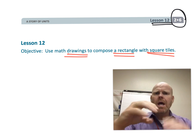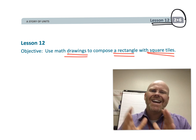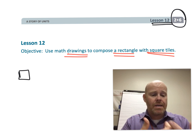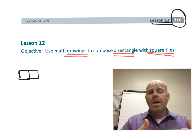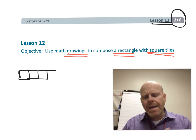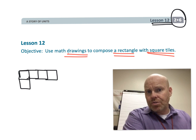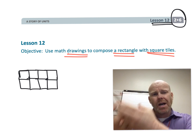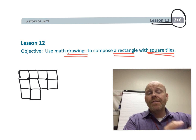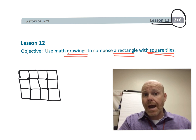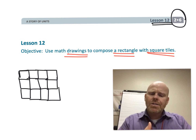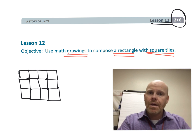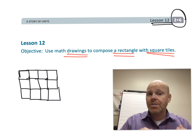Using square tiles, the idea is that in the previous lessons we've been using manipulatives — teddy bears, color tiles, coins. Now as a step towards the abstract, we're going to have students drawing the pictures, moving from concrete to pictorial, and then eventually to abstract in third and fourth grade. This lesson begins that process.